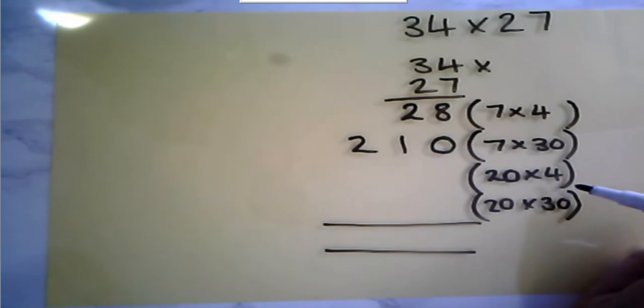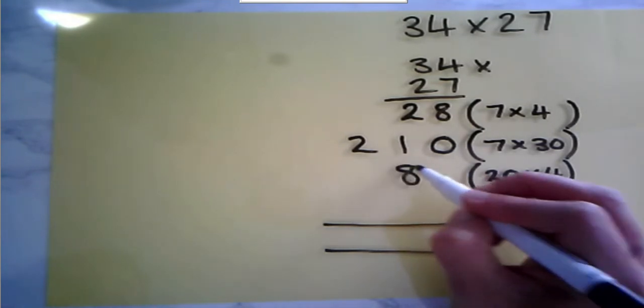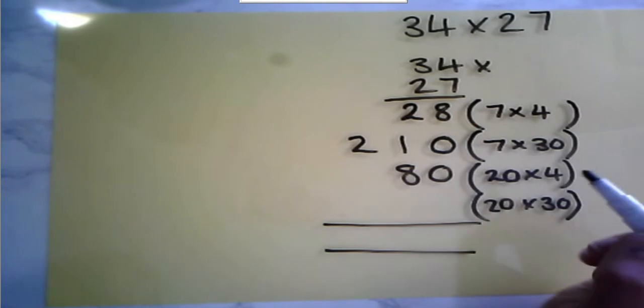And then, looking at my 20×4, I know that 2×4 is 8, and I know that 20 is ten times bigger than 2. So I know that 20×4 is going to give me 80. Are they in good columns? Yeah, they're fine.